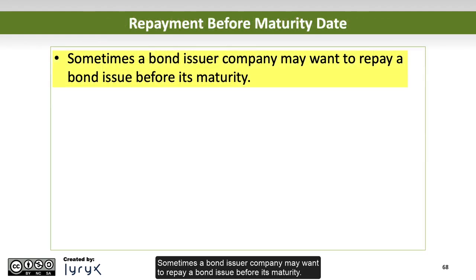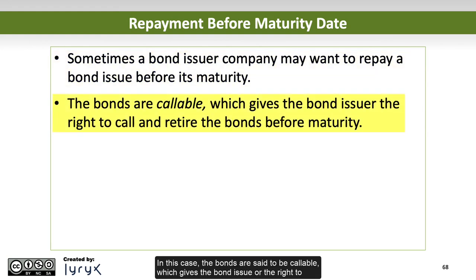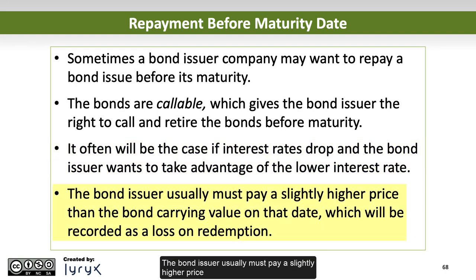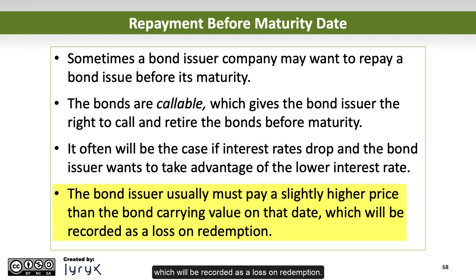Sometimes a bond issuer company may want to repay a bond issue before its maturity. In this case, the bonds are said to be callable, which gives the bond issuer the right to call and retire the bonds before maturity. This often happens if interest rates drop and the bond issuer wants to take advantage of the lower interest rate. The bond issuer usually must pay a slightly higher price than the bond carrying value on that date, which will be recorded as a loss on redemption.